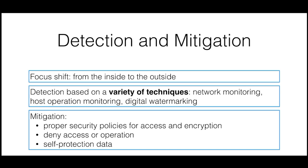Some systems are proactively trying to deny access to data, or they do not perform some operation if suspicious activities are identified. This could be the case, for example, of a mail server refusing to forward a suspicious attachment. Another example of mitigation is implementing self-protecting data, namely an additional software layer implementing corporate security policies that takes care that access to the data is available only to authorized entities.